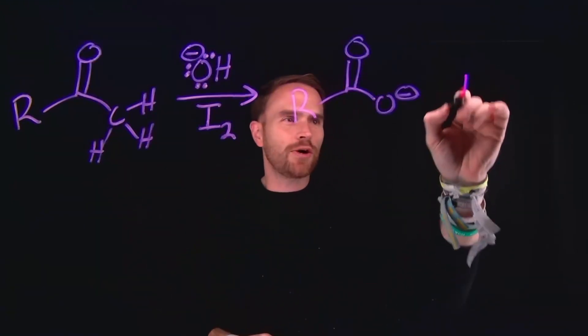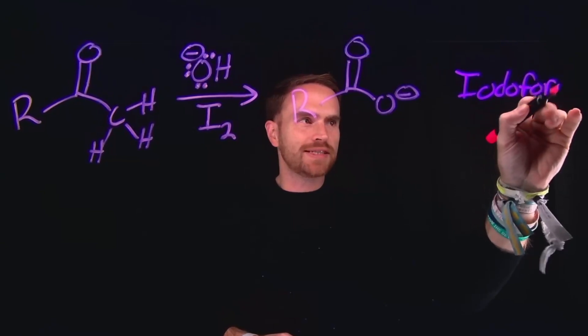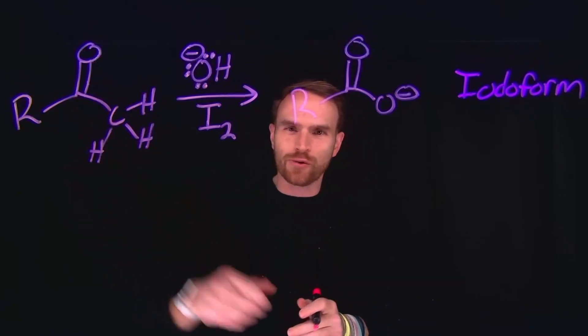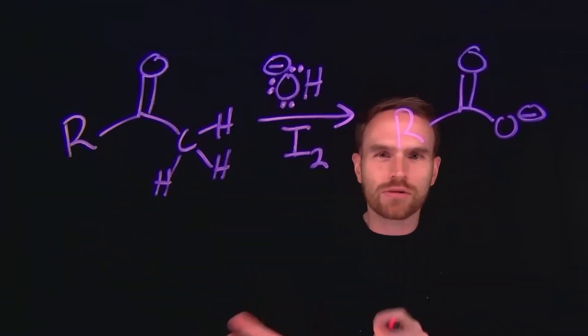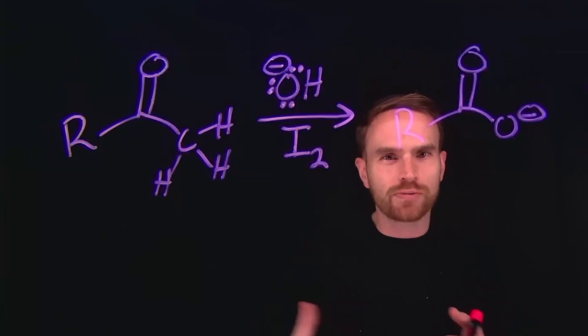This reaction is what is known as the iodoform test. The iodoform test is unique because it's used to determine whether or not compounds contain carbonyl groups. It's a specific type of haloform reaction. And as you'll see here, we'll talk about how this helps you identify whether or not there are carbonyl compounds or carbonyl functional groups present in your molecule.